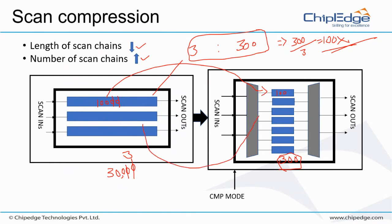From the external world outside the IC, there won't be any change - you still have 3 scan-ins and 3 scan-outs. What we're talking about are magic boxes that help convert 3 to 300 and 300 back to 3. What do you call these boxes or blocks?